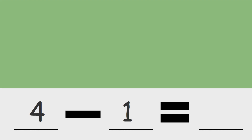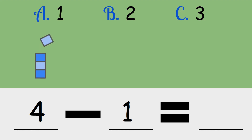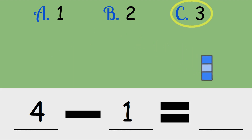Four minus one. Is the answer one, two, or three? Four minus one is three.